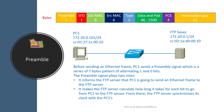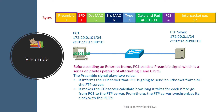Let's start off with the preamble signal. In this diagram we have two Ethernet hosts: PC1 and an FTP server. PC1 is now ready to send Ethernet frames to the FTP server. Before sending an Ethernet frame, PC1 sends a preamble signal, which is a series of seven bytes with a pattern of alternating one and zero bits.